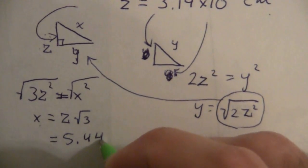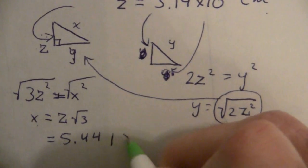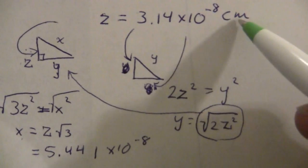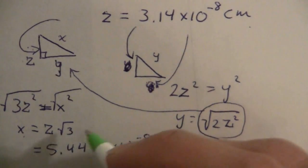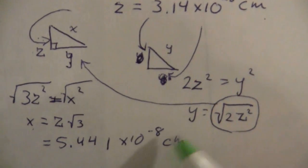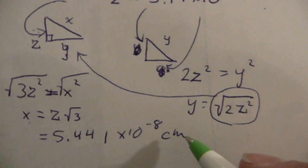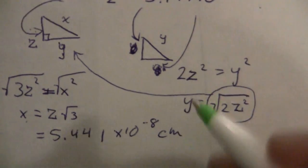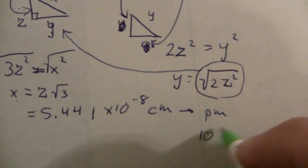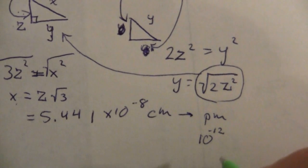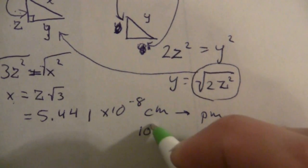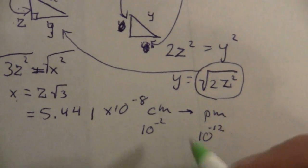So that is my dimension there. 5.44, let me go ahead and carry this out another digit, times 10 to the minus eighth, and what are the units? Well, I have centimeters, so, and this is just a number, so that is in centimeters. Let's go ahead and convert this to picometers. And we do that by recognizing that picometers is 10 to the, rather, minus twelfth meters, and centimeters is 10 to the minus two. The difference of 10 to the minus 10.